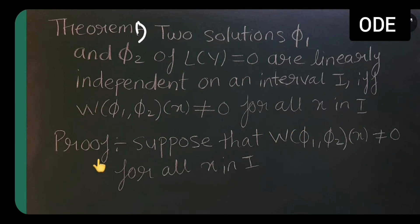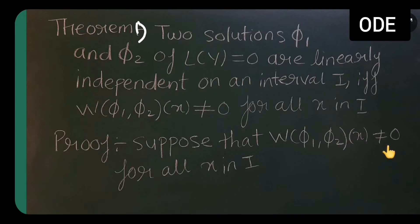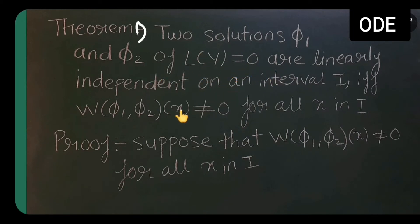The proof starts like this. Suppose that the Wronskian W(phi 1, phi 2)(x) is not equal to 0 for all x in I. We know that the solutions phi 1 and phi 2 of L(y) = 0 are linearly independent when this Wronskian is not equal to 0.